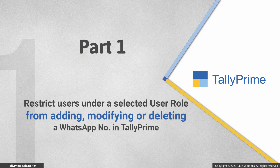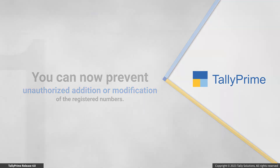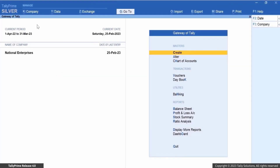First, let's see how to restrict a user from adding a WhatsApp number in TallyPrime. Based on your business practices, you might need to restrict certain users from adding or modifying registered business WhatsApp numbers. You can allow only the admin user to manage the business WhatsApp number for the company, helping prevent unauthorized addition or modification of registered numbers.